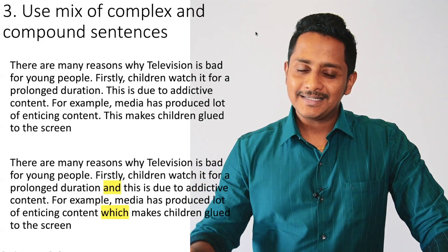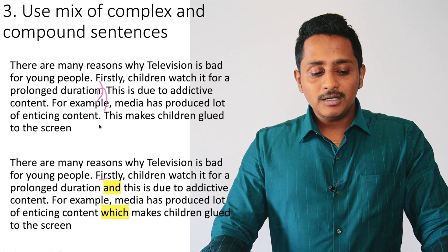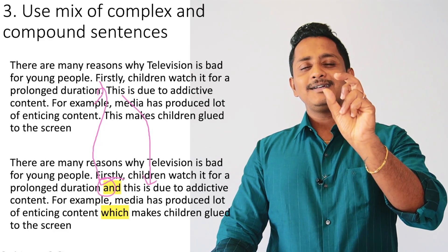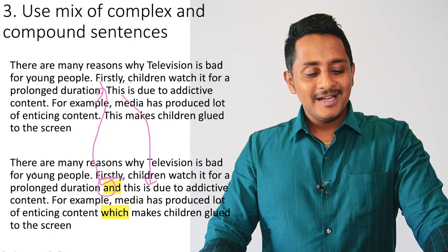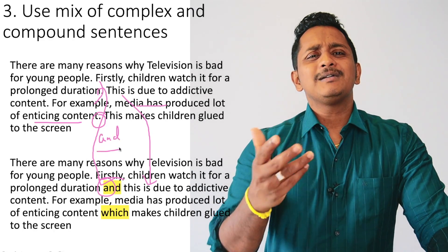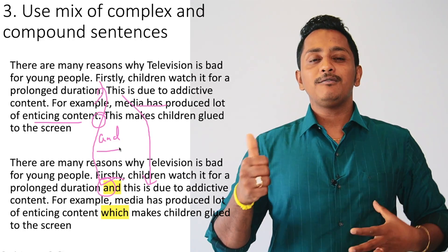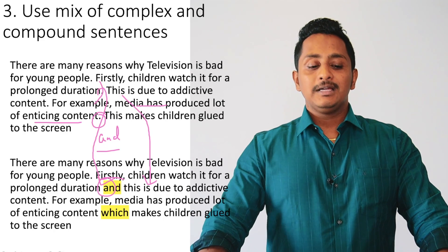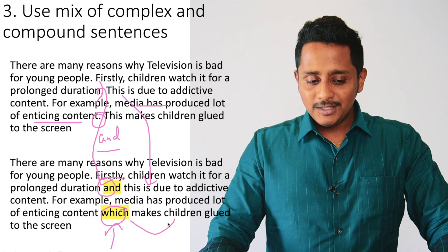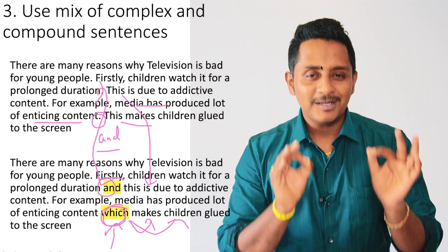You need to mix compound and complex sentences. For example: 'Children watch it for a prolonged duration and this is due to addictive content.' Removing the full stop and adding 'and' makes it a compound sentence — easy. Similarly, 'media has produced a lot of enticing content and this makes children...' also becomes compound. For a complex sentence, use words like since, although, though, even though, if, when.